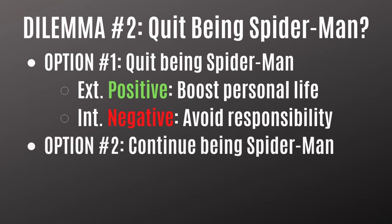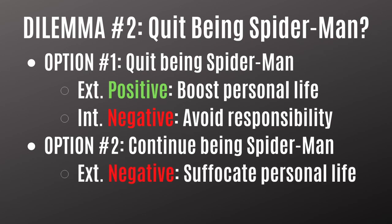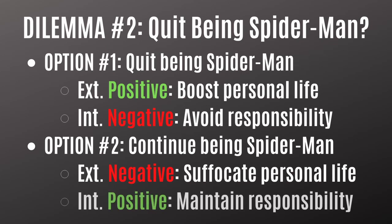Option two is that he could continue being Spider-Man. The external outcome is negative because he'd be endangering his mental health and denying himself the opportunity to live as a human being, improve his grades, and pursue Mary Jane. The internal outcome, however, would be positive because he'd be keeping up with his responsibility to the people of New York City, keeping his promise to his uncle — great power and responsibility and all that — and doing what he believes is right.